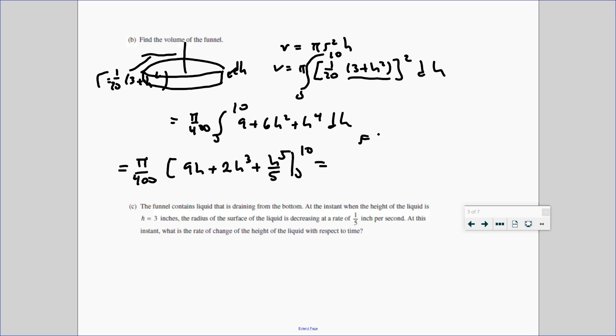And using the fundamental theorem, f of 10 minus f of 0, plug in, we get the π over 400. And we're going to get 90 plus, be careful, that becomes 2, 1,000 times 2. So that becomes 2,000. 10,000 plus 10 to the 5th is 10,000 over 5. And this is inches. So we want volume. So this would be inches cubed. We don't worry about that for 0 because that's all just going to become 0 anyways. So there is our final answer.